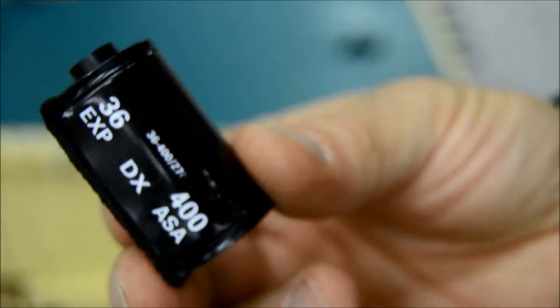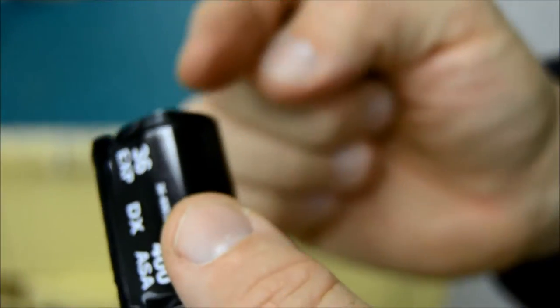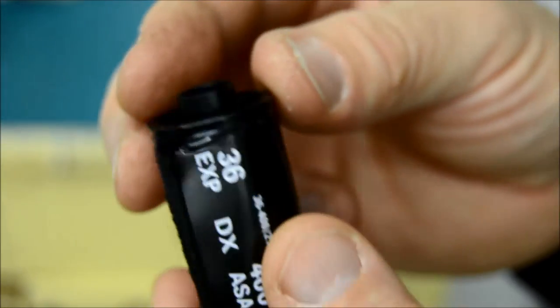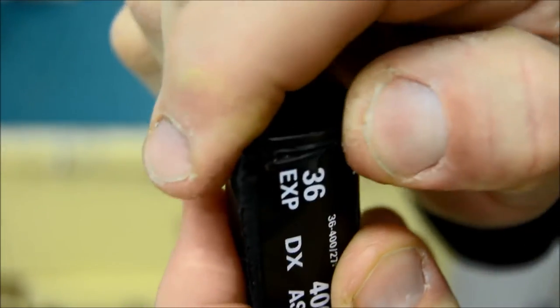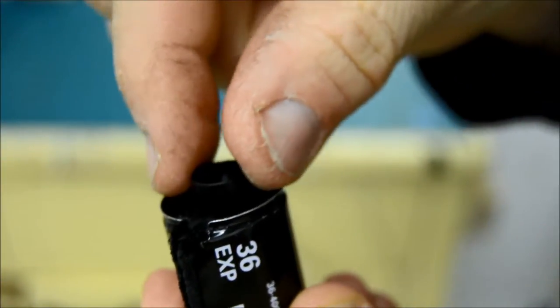So how do you get film into this cartridge? Well, it goes in here. What you need to do is you need to pop the end off. So you pop one end off and get the spool out.